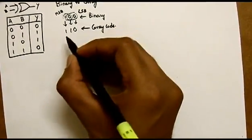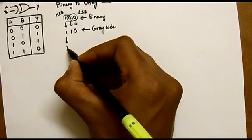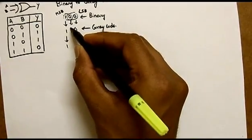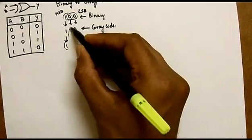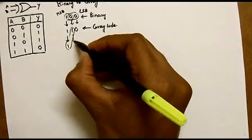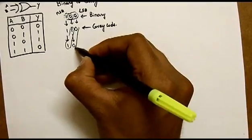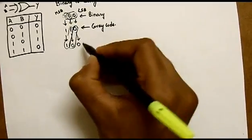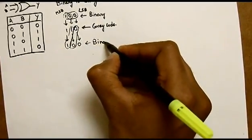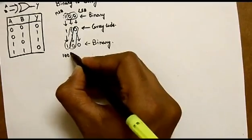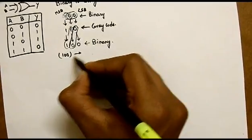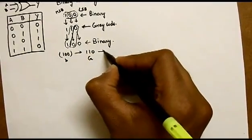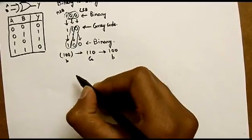For getting the equivalent binary code from a gray code, the rule is similar: MSB is always the same for binary and gray, so we write the MSB directly. Now we XOR diagonally. 1 and 1 XOR is 0. Again diagonally, 0 and 0 XOR is 0. So we get the equivalent binary. So 1-0-0 in binary equals 1-1-0 in gray, which converts back to 1-0-0 in binary.